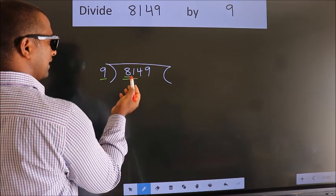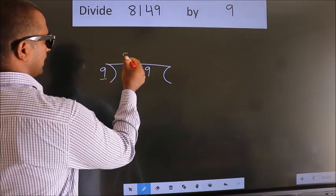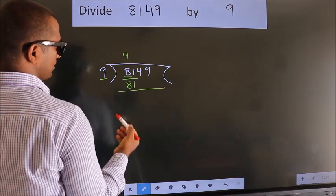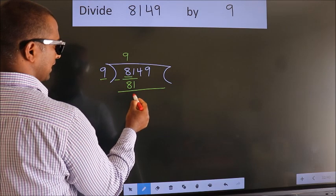When do we get 81? In the 9 table, 9 nines is 81. Now we should subtract. We get 0.